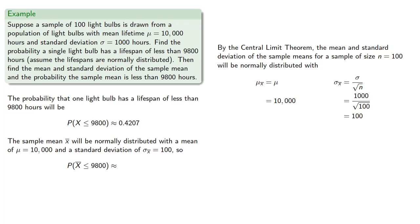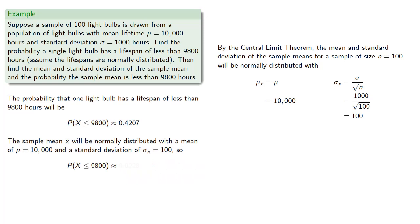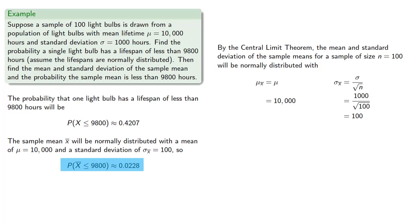We can then find the probability that our sample mean is less than 9,800. Note that while the probability a single light bulb has a lifespan of less than 9,800 hours is rather high, the probability that our sample of 100 will have a mean of 9,800 hours or less is much lower.